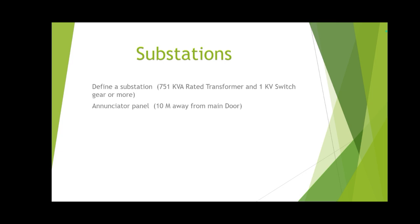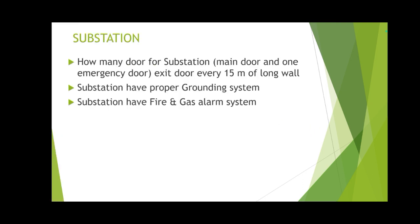Annunciator panel: we have to install the annunciator panel 10 meters away from the main door. How many doors does a substation have? For a small-size substation there is one main door and one exit emergency door. If the substation size is bigger, there can be 3, 4, or 5 doors, but for every long wall of 15 meters there must be one exit door.